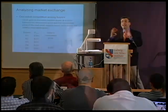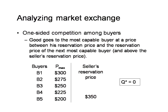Suppose the seller's reservation price is greater than the reservation price of the most capable buyer. In that case, there are no feasible gains from trade — no buyer is willing to pay as much as the seller requires. The equilibrium quantity here is zero, so there will be no exchange.